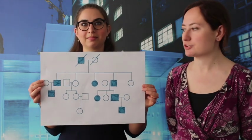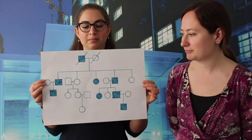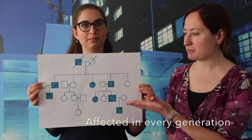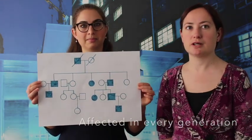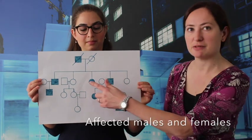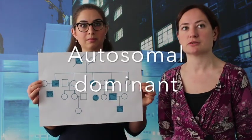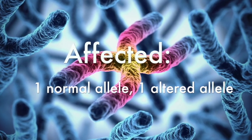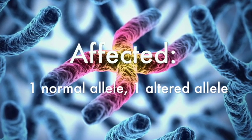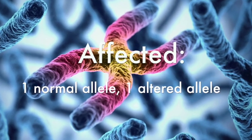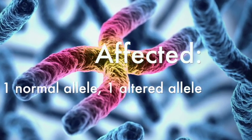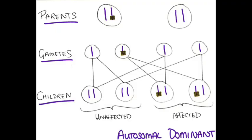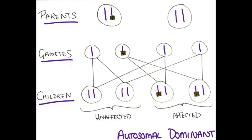Let's look at the pedigree we've just drawn to see if we can work out the inheritance pattern. Here we see that affected family members are in every generation, and there are affected males and females. This gives us a clue that this could be autosomal dominant. Autosomal dominant inheritance means that a person needs to have one copy of an altered gene or mutated allele to have the disorder — they also have one normal copy. This means that a person with the condition has a 50% chance of passing on the mutated allele to each of their children.